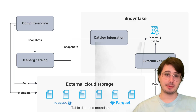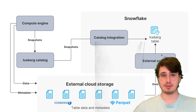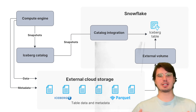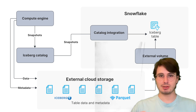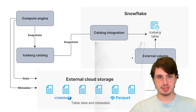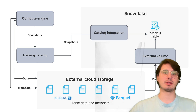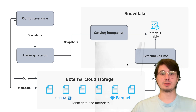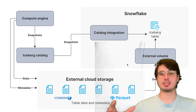Now for data ingestion and file management: number one, use append-only patterns when possible. Append-only ingestion simplifies consistency and reduces the need for conflict resolution during concurrent writes, because two writes can simply append to each other. This allows multi-threading, which Iceberg handles quite well. You're also going to want an optimal file size of around 100 to 500 megabytes for Parquet files to balance read and write costs. Split up your data and use Iceberg compaction jobs to merge small files post-ingestion so you stay within that optimal file size range.